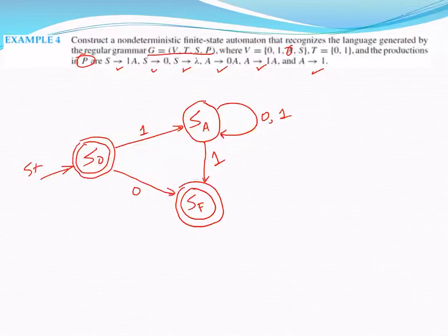A produces 1 is a transition from SA to SF on input of 1. And that is the finite state automaton that recognizes the language generated by G above.